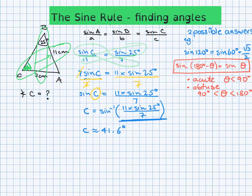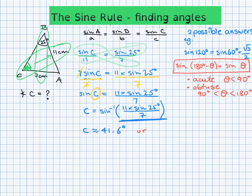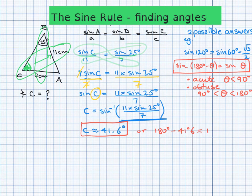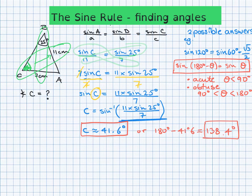We have to be careful — it could be the supplement as well. So we may have two options. If the first answer is 41.6°, the other option is 180° minus 41.6°, which gives approximately 138.4°. This is the second possible answer. If the question specifies an acute or obtuse triangle, you would know which one to choose.